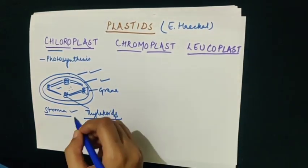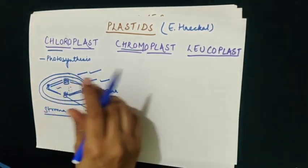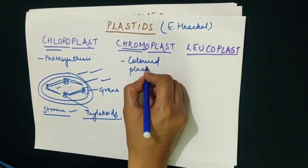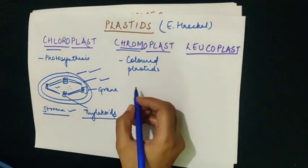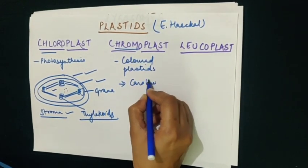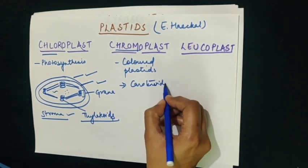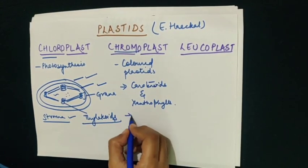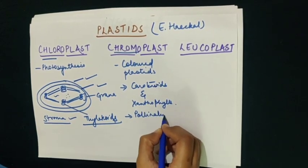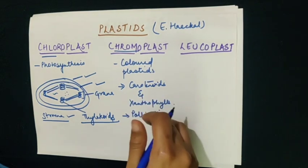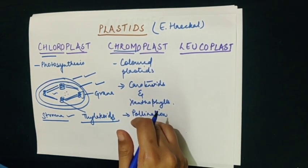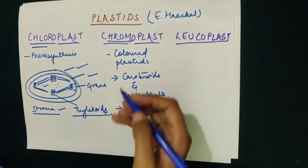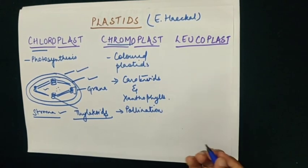Moving on to the second type of plastid, which is chromoplast. As the name suggests, 'chromo' is for color — so these are colored plastids that provide color to plants. These colored pigments can be carotene, carotenoids, and xanthophylls. Chromoplasts help the plant in processes like pollination and dispersal of seeds by attracting agents through color.